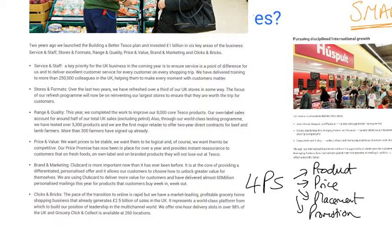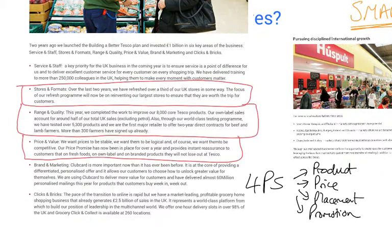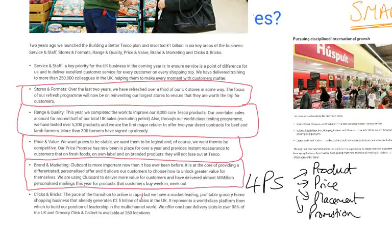The first objective is not specifically a marketing one, although it feeds into the product if you consider the product to include the service people receive. Stores and formats is very much a placement idea — a marketing-based objective. Range and quality is clearly product, so also marketing. Price and value is obviously the price element, also marketing. Brand is all part of promotion, also marketing. So all of these are very strongly marketing-based, showing that marketing plays a really important part of Tesco's business.